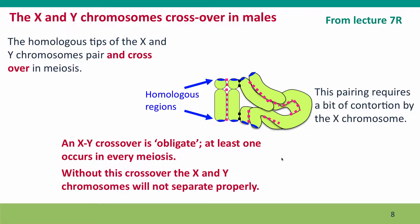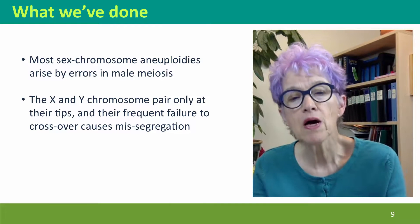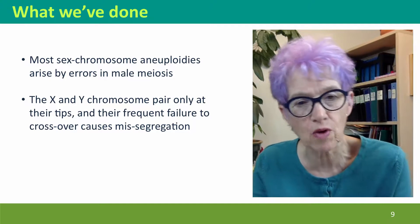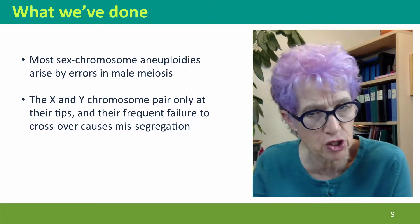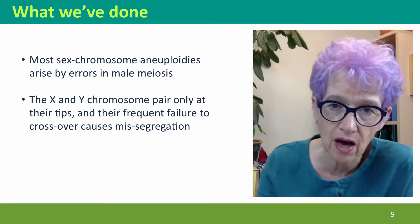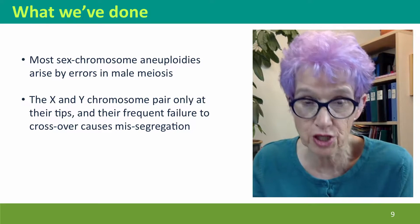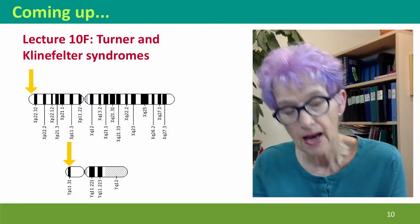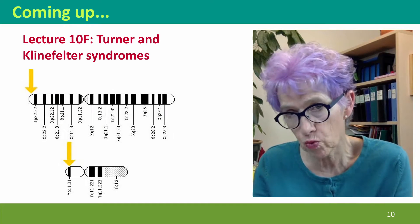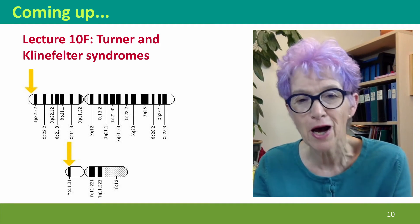So to summarize: sex chromosome aneuploidies arise by errors in male meiosis as a consequence of the only very short pairing regions available to these chromosomes, and thus the higher probability that they'll fail to cross over — causing missegregation and generating an aneuploid sperm, which gives rise to an aneuploid zygote. Coming up next, we're going to think about the phenotypes of people with sex chromosome aneuploidies, because these again deserve some special consideration. I hope to see you there.